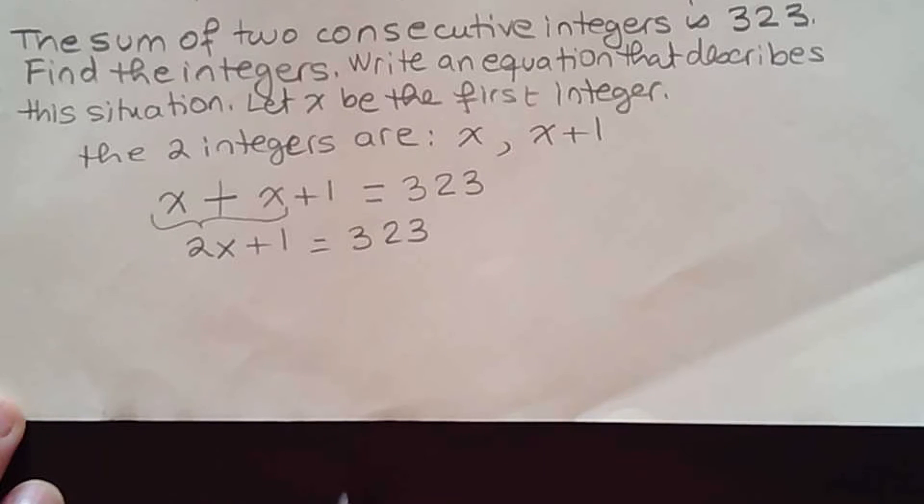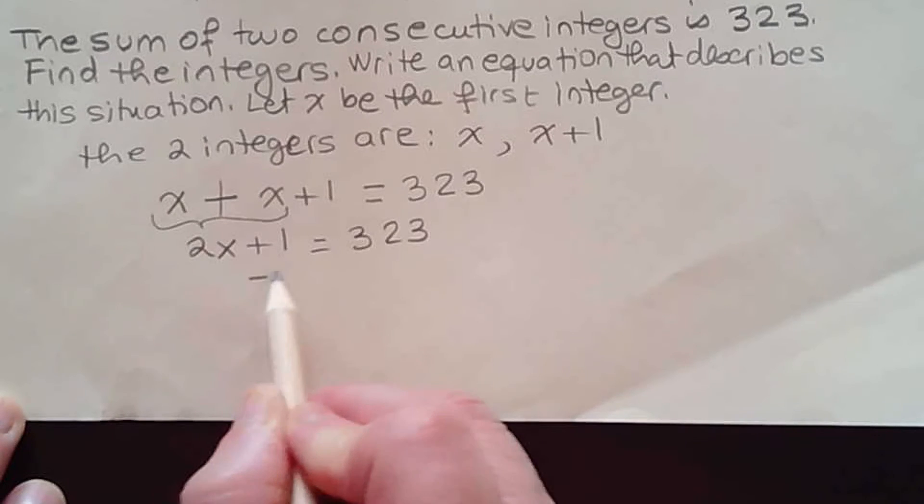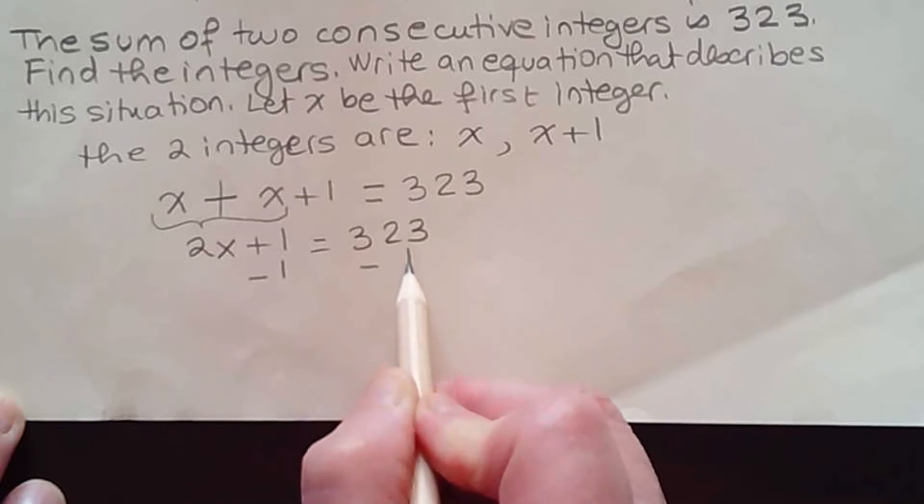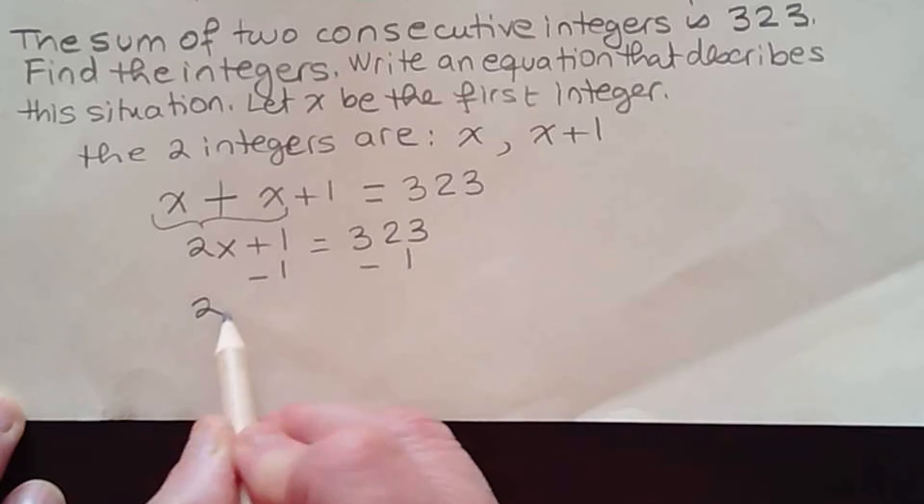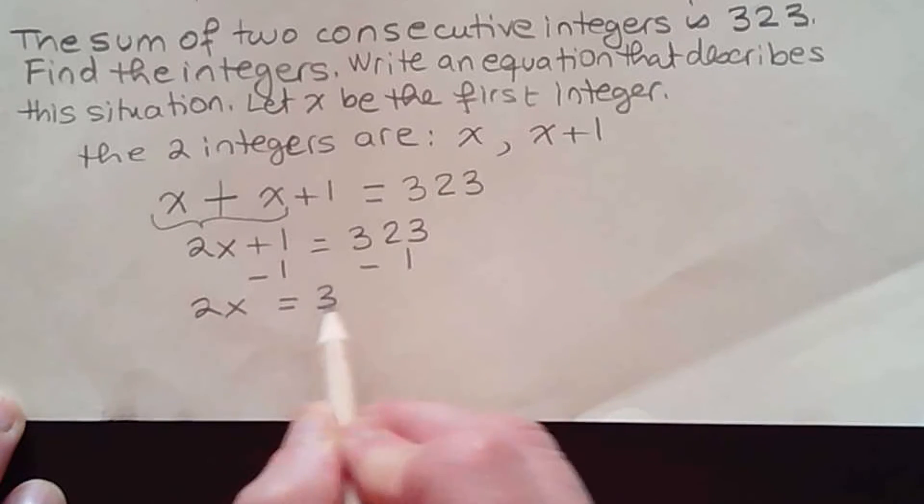We're going to have to solve this linear equation. We subtract one on both sides and we get 2x is equal to 322.